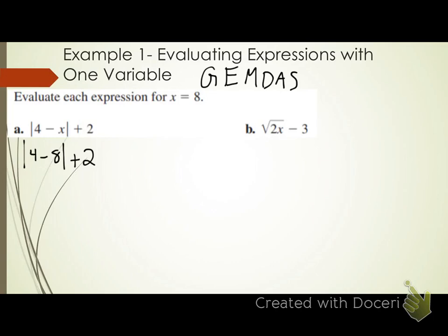G stands for grouping symbols — do I have any grouping symbols in this case? Yes, the absolute value bars. So I need to simplify everything within the absolute value bars. What's 4 minus 8? Negative 4. I still have the absolute value bars, but I've done all the operations I can inside of them, so I need to go ahead and simplify them.